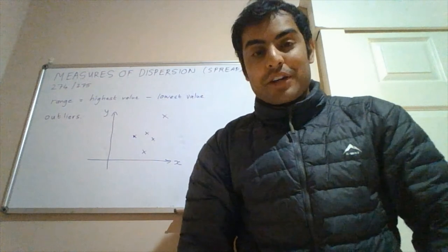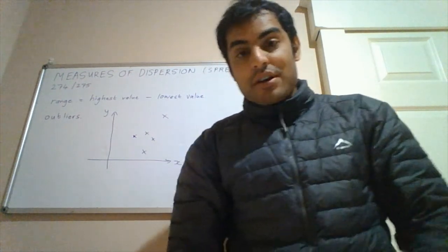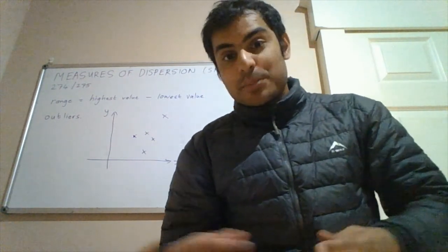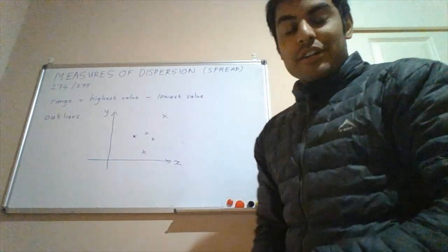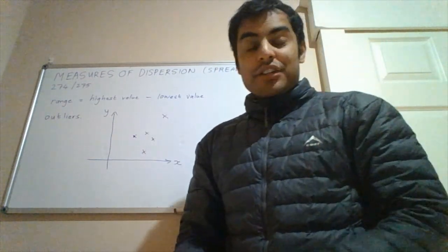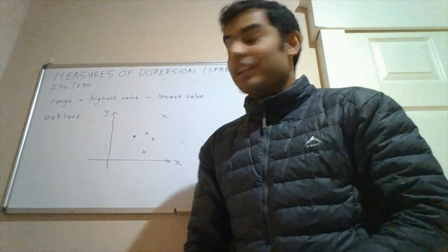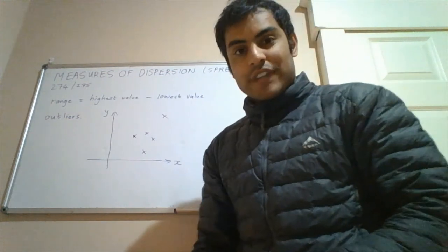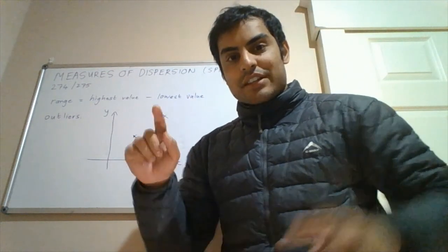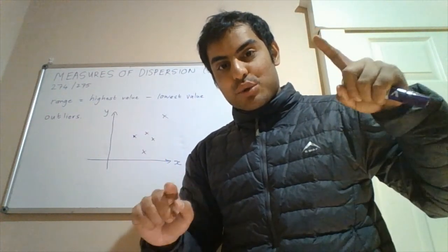So lastly, we're going to talk about measures of dispersion, or in other words, how spread out the data is. So we start off by looking at the range, and the range is the difference between the highest value and the lowest value. So the equation reads highest value minus lowest value, and that just shows us the difference between the two extremes.